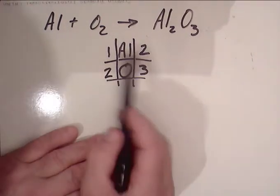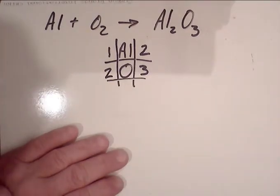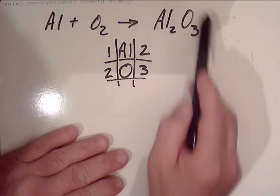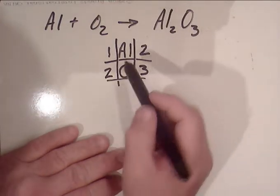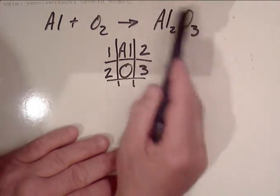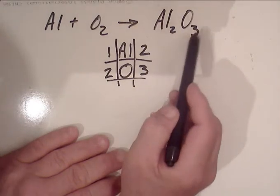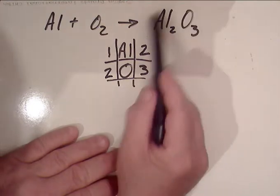Now nothing is balanced. Nothing is the same on both sides. This is the reactant side and this is the product side. You want to balance the most complex formula, so you're going to go with this one.